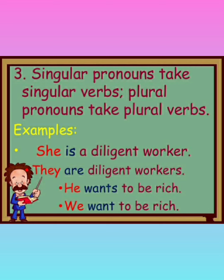Singular pronouns take singular verbs, and plural pronouns take plural verbs. 'She is a diligent worker' — she is a singular pronoun referring to only one person, that's why singular. And plural: 'they are diligent workers' — they refers to so many persons, so plural. 'He wants to be rich' — he is third person singular, so with the main verb 'want' we add S: 'wants.' 'We want to be rich' — we is plural, that's why 'want.'